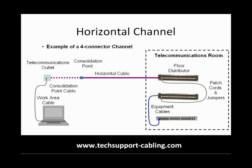In structured cabling terms, a horizontal channel consists of all the cables and patch cords that make up the connection between the active equipment at the work area — for example a PC, telephone, printer, and so on — and the active equipment in the telecommunications room.